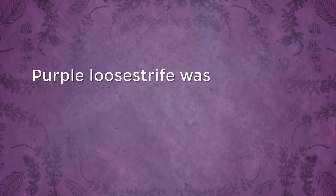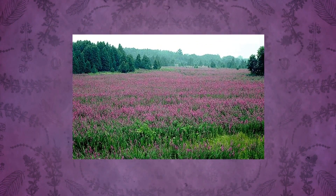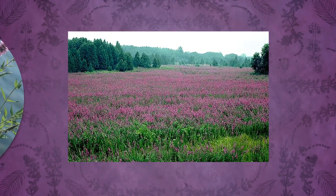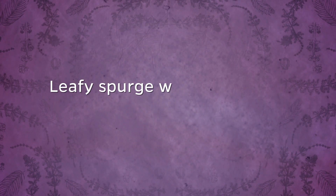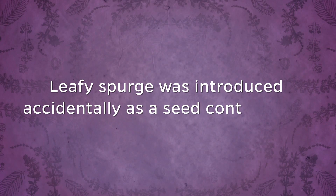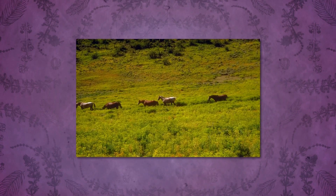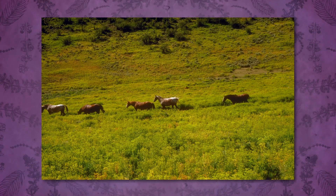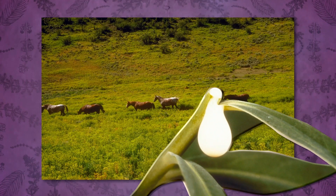Purple loosestrife was introduced from ballast water in European sailing ships. It has spread westward and infests all U.S. states except Florida, Alaska, and Hawaii. Purple loosestrife forms dense strands with thick mats of roots that can spread over large areas. Leafy spurge was introduced accidentally as a seed contaminant. It currently infests southern Canada all the way south to Texas, dominating rangeland and pastures. Its milky sap is poisonous to cattle and humans.